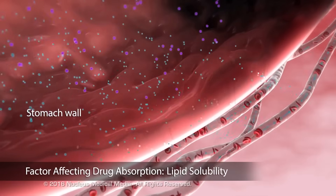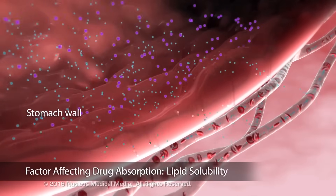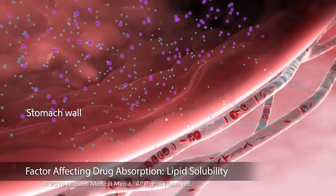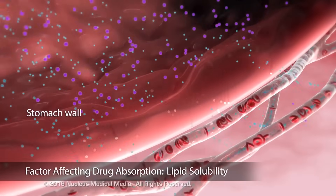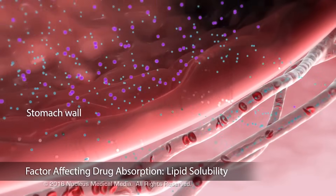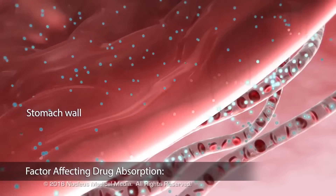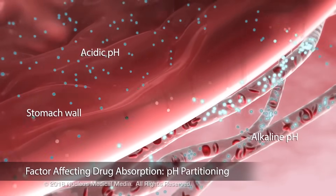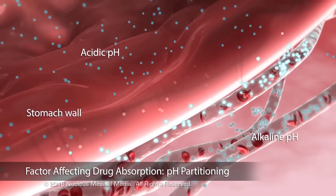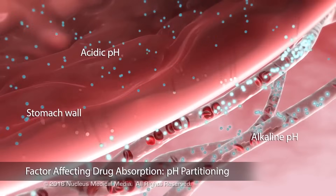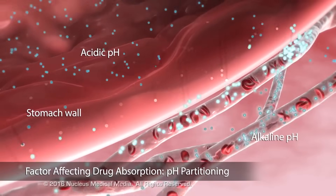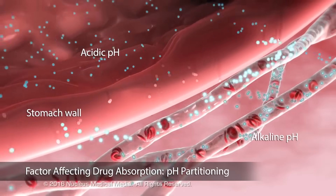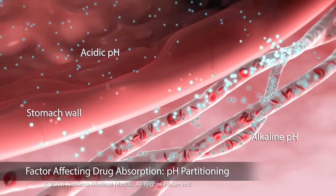Lipid solubility: highly lipid soluble drugs pass through the phospholipids in the cell membrane more easily than drugs of low lipid solubility. And pH partitioning: absorption is faster when the difference between the pH at the site of administration and the pH of the plasma attracts more drug molecules to ionize in the plasma.